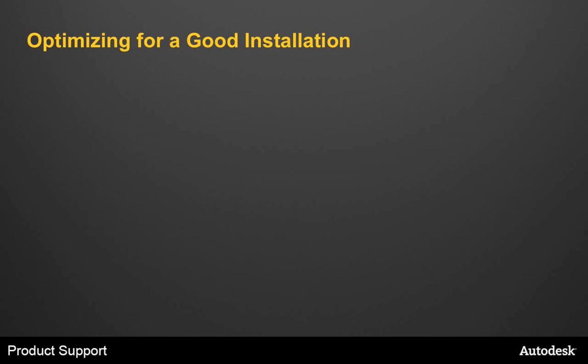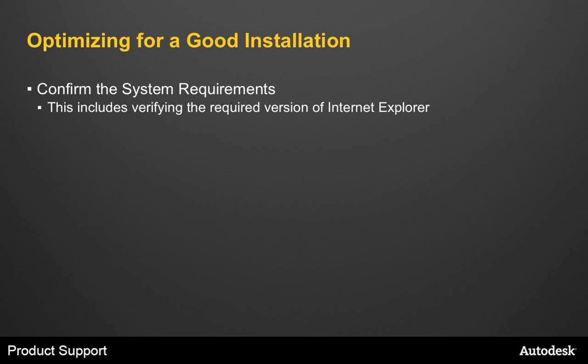Before we get into that, I want to talk about how to optimize for a good installation. These are just some best practices to help ensure a successful installation. The first thing you should do is make sure that the computer you're installing to meets the minimum system requirements. If your system doesn't meet these requirements, problems can occur both within AutoCAD and at an operating system level. This also includes confirming the required version of Internet Explorer. For the 2011 products, we require Internet Explorer 7 or later.